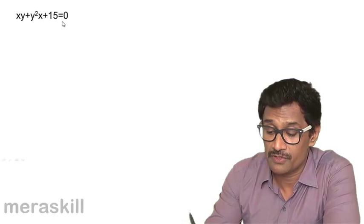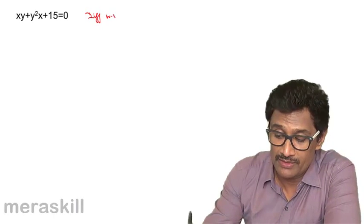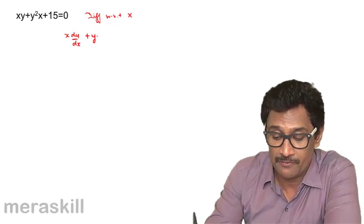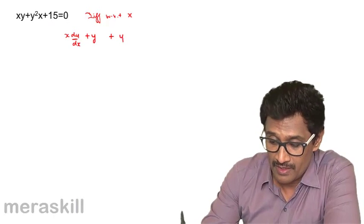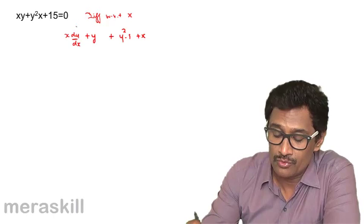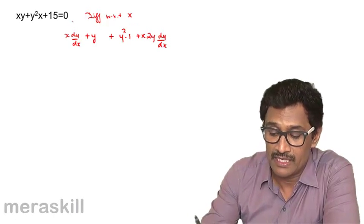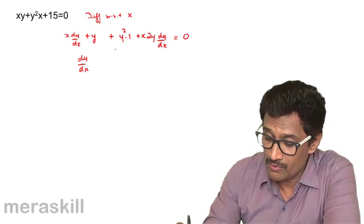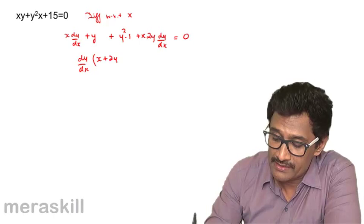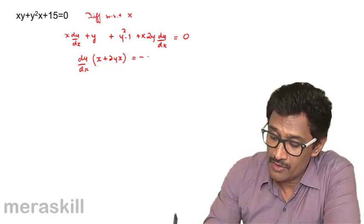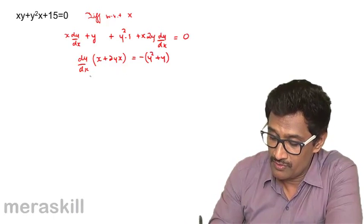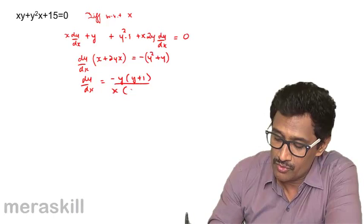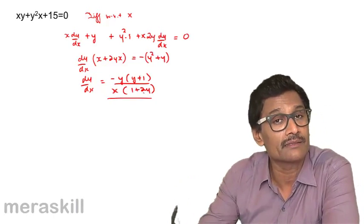Now differentiating xy + xy² = 15 with respect to x: we get x·(dy/dx) + y·1, then y²·1 + x·2y·(dy/dx). Derivative of 15 is 0. Collecting all dy/dx terms: dy/dx·(x + 2xy) = -(y² + y), so dy/dx = -y(y + 1) / x(1 + 2y).